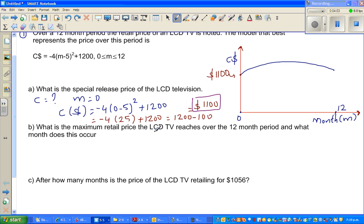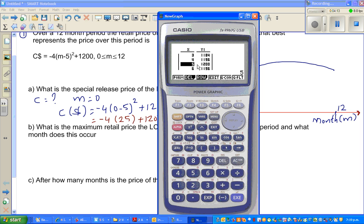What is the maximum retail price of the LCD TV over the 12 month period, and what month does this occur? So let me bring the calculator back. In month 4 the price is 1196. In the 5th month it is 1200, and in the 6th month it's again 1196.